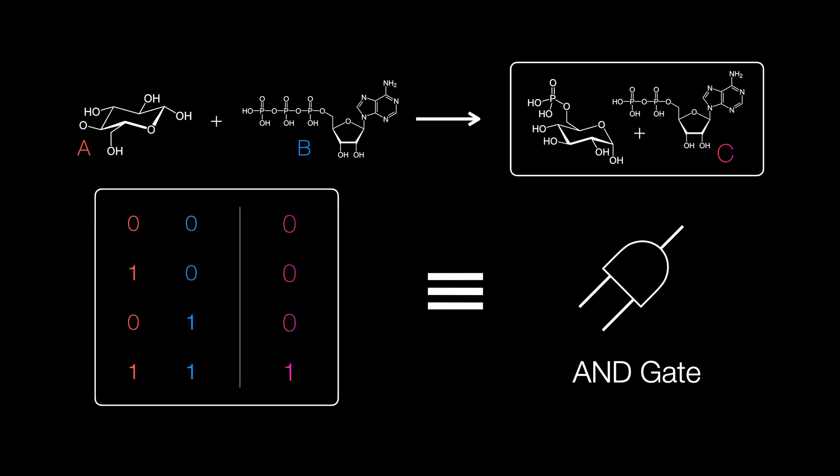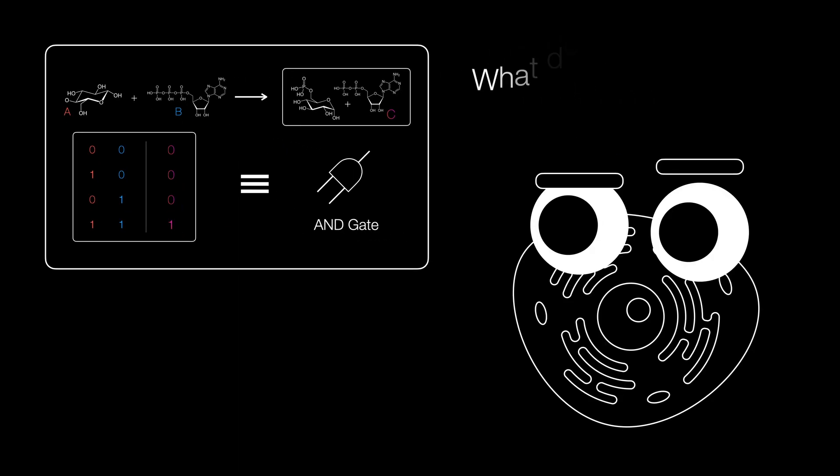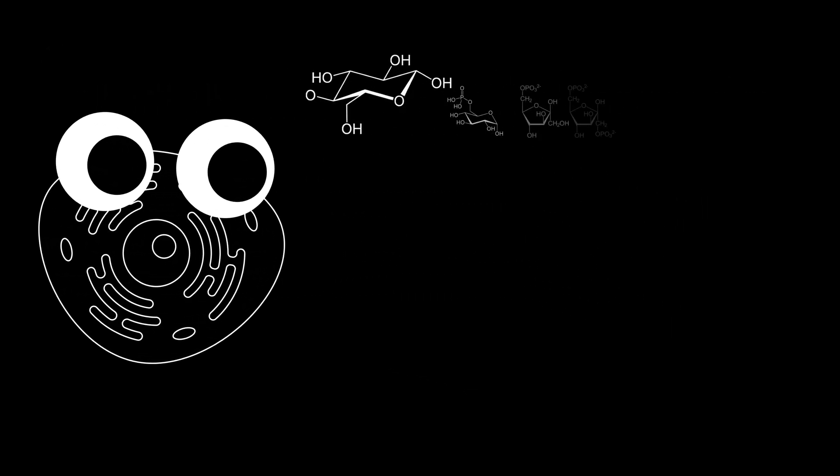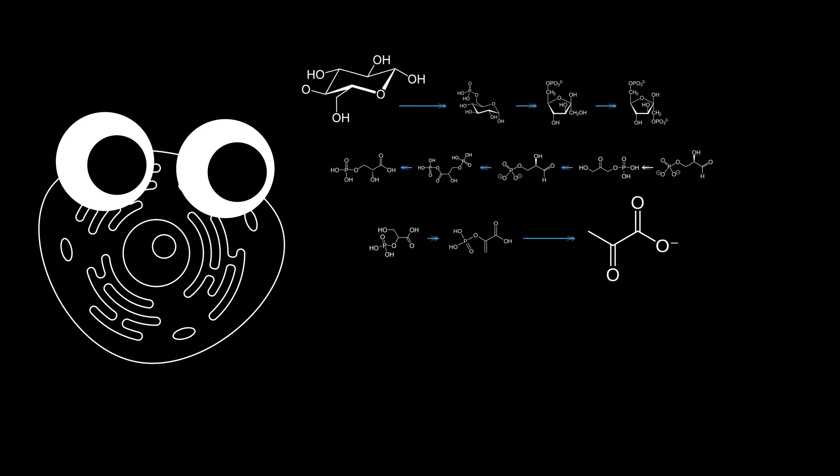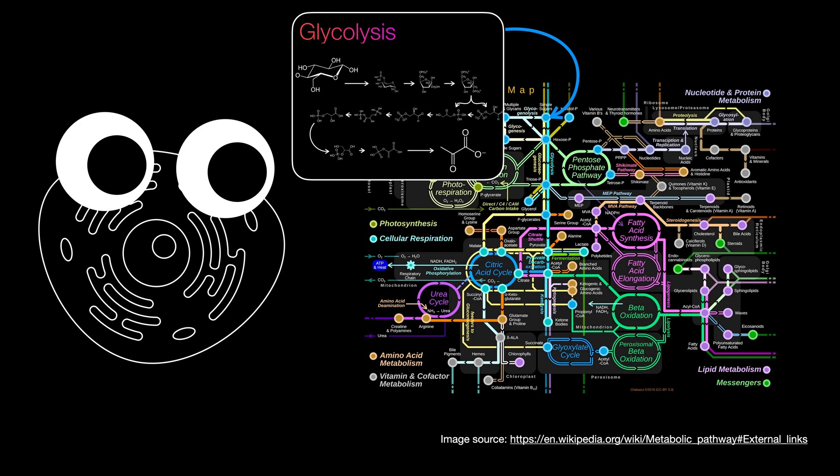And what does this have to do with biology, you may ask? Well, living things are made of cells, and the parts of those cells are made from biomolecules that interact through a complex web of chemical reactions that make life possible. And each of those chemical reactions follow logical rules, much like what we've just seen.